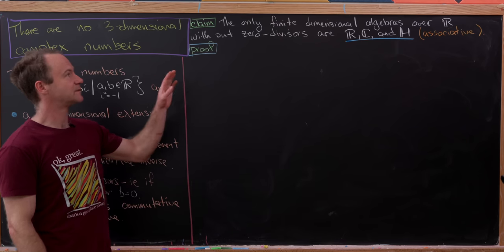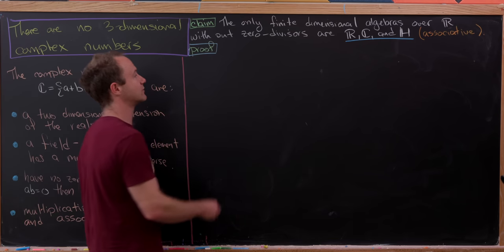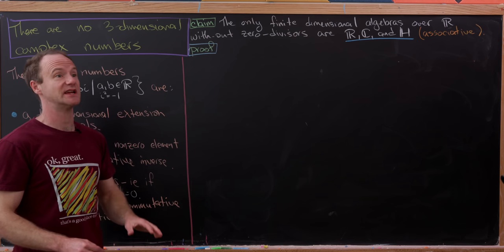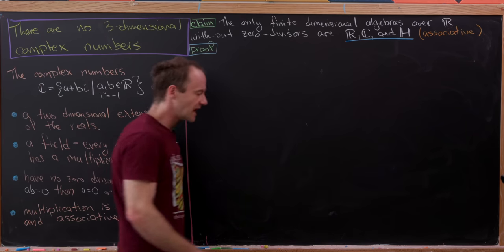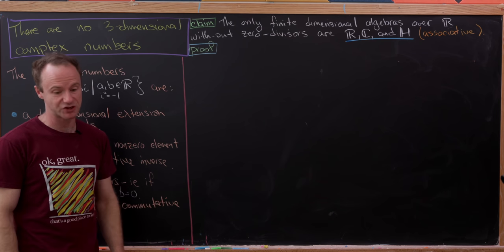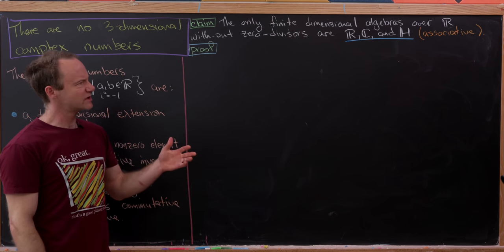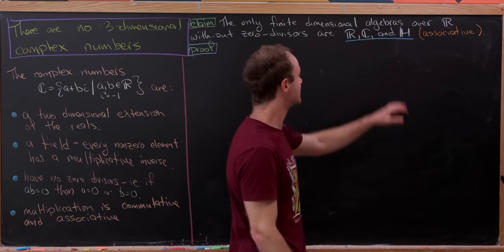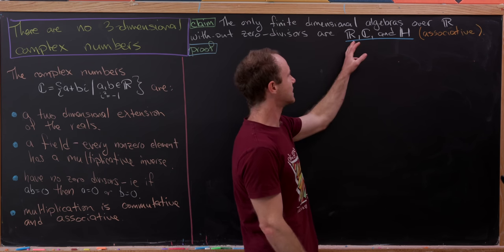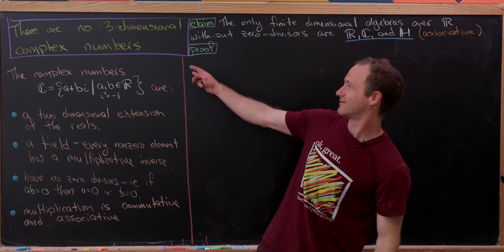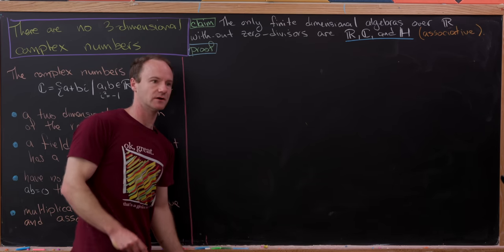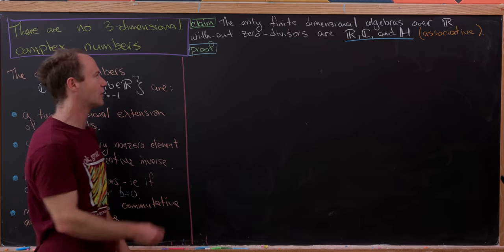The claim says: the only finite-dimensional algebras over R without zero divisors are the real numbers themselves, the complex numbers, and H — the quaternions, or Hamilton's quaternions. We want an associative algebra here. If we restrict to associative and commutative, we lose the quaternions and only get R and C. R is one-dimensional, C is two-dimensional — nothing there is three-dimensional — and the quaternions are four-dimensional. So the answer is no: there are no three-dimensional complex numbers.